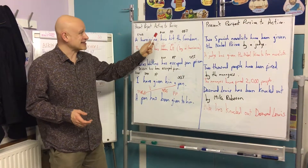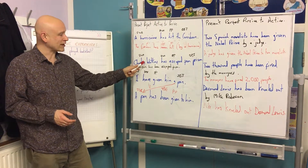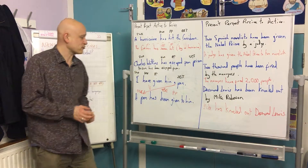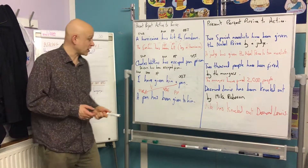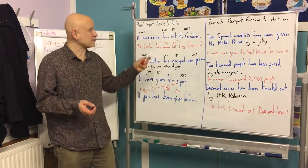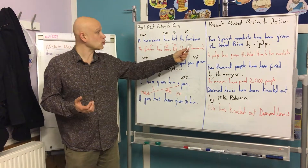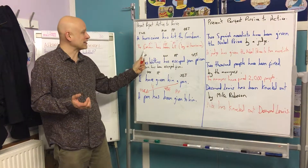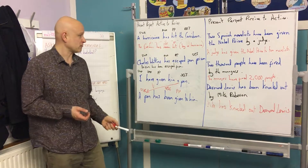So: 'The hurricane has hit the Caribbean.' Charles Watkins has escaped from prison, or 'I have given this guy over there a pen.' Now if I want to make them passive, I want to talk about the object. So: 'The Caribbean has been hit by a hurricane.'